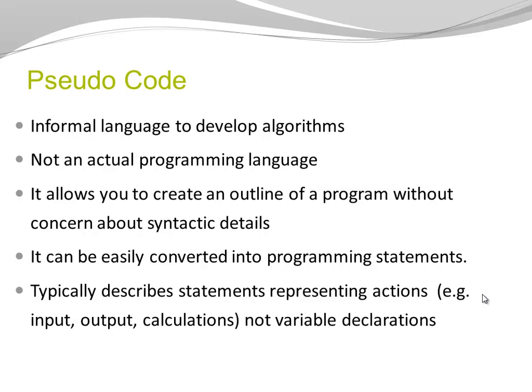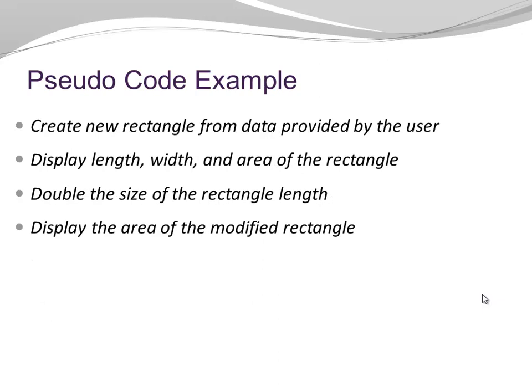Let's look at an example. Let's say we have a class called Rectangle. We want the user to choose a length and a width and then display length, width, and area. And after that, we want to double the length and see how that affects the area. So this is how that would look in pseudocode: create a new rectangle from data provided by the user; display length, width, and area of the rectangle; double the size of the rectangle length; display the area of the modified rectangle. Very sequential in this particular example.